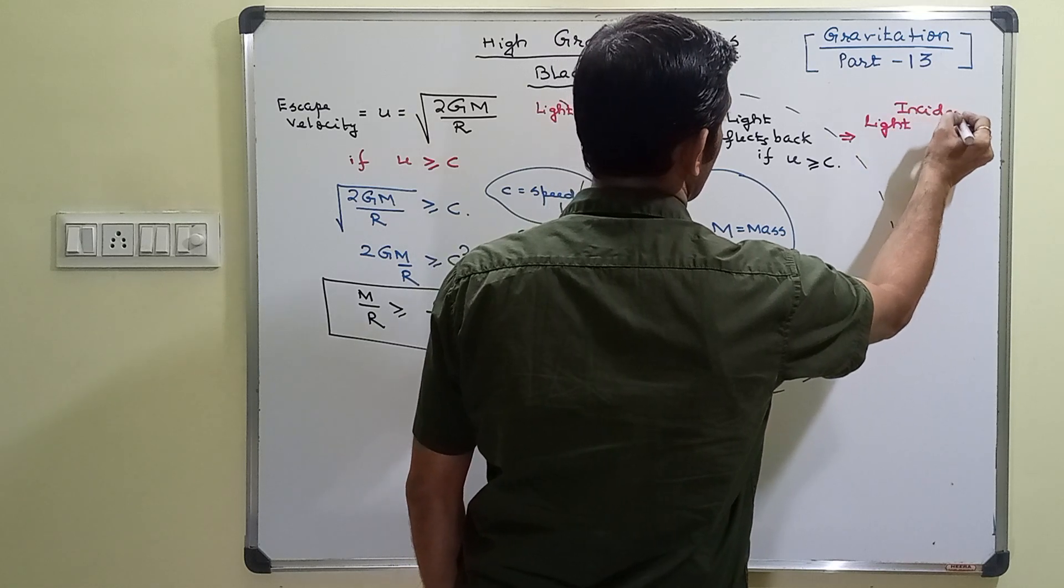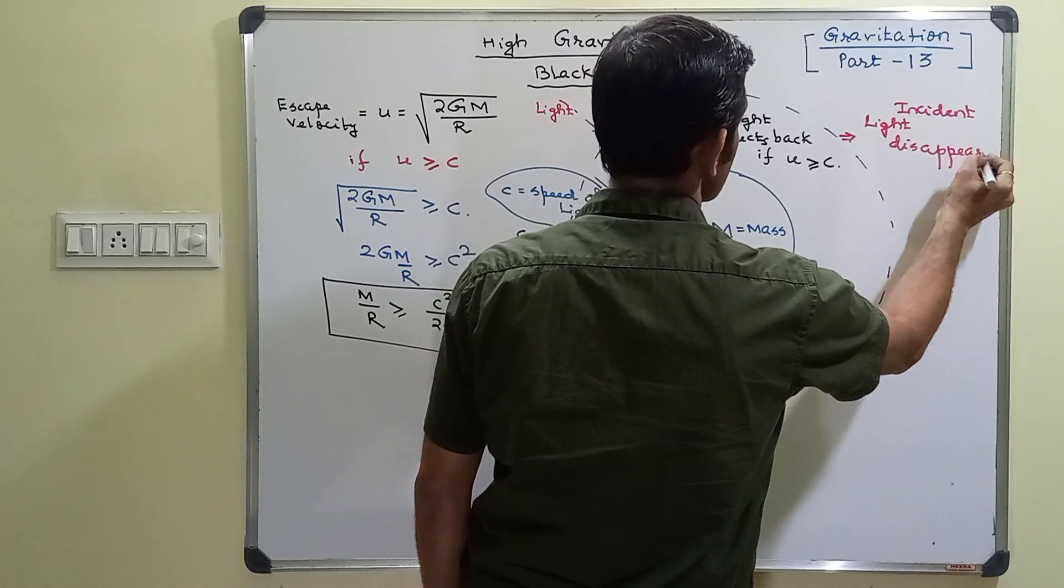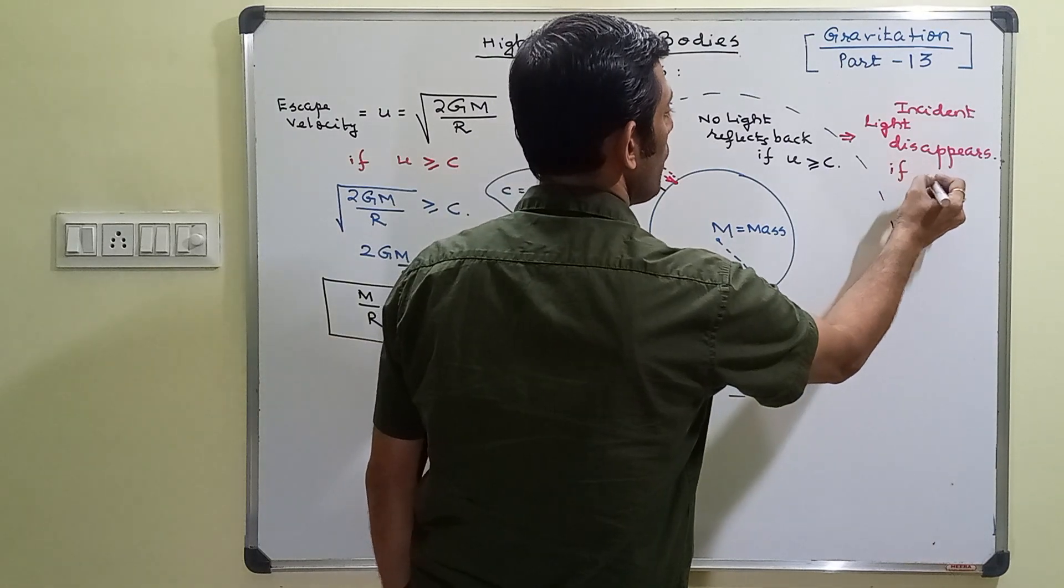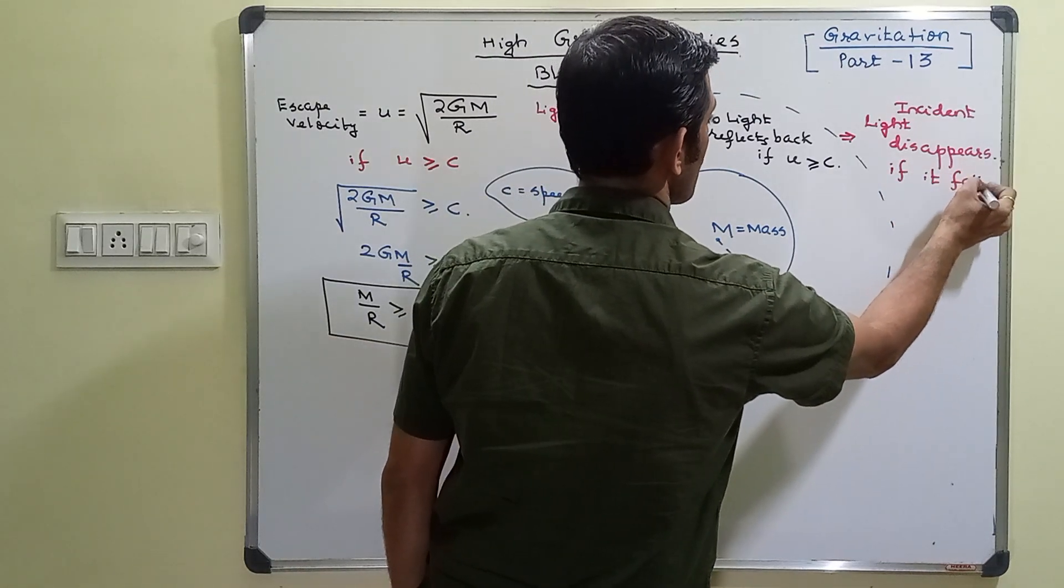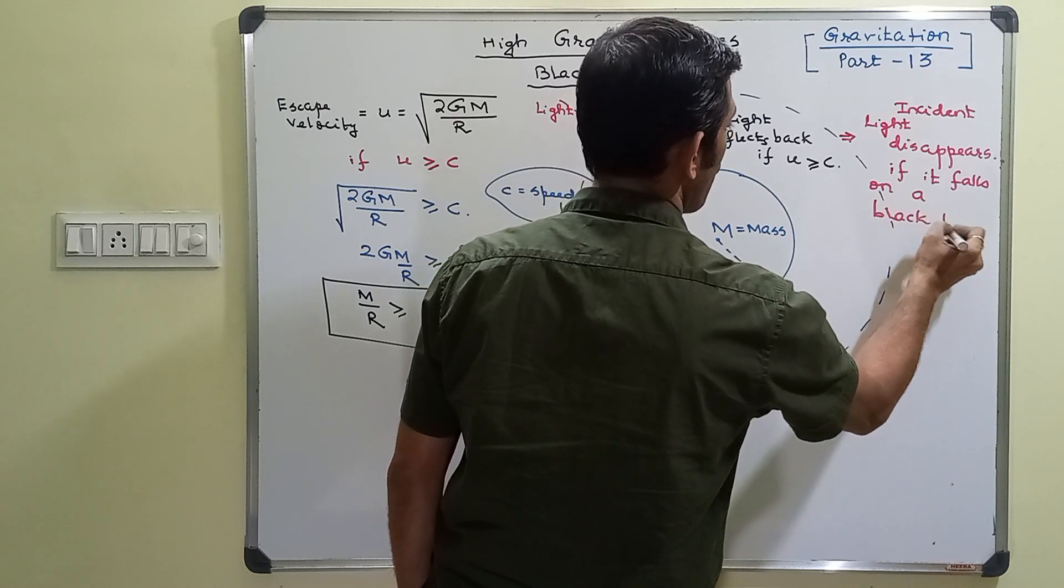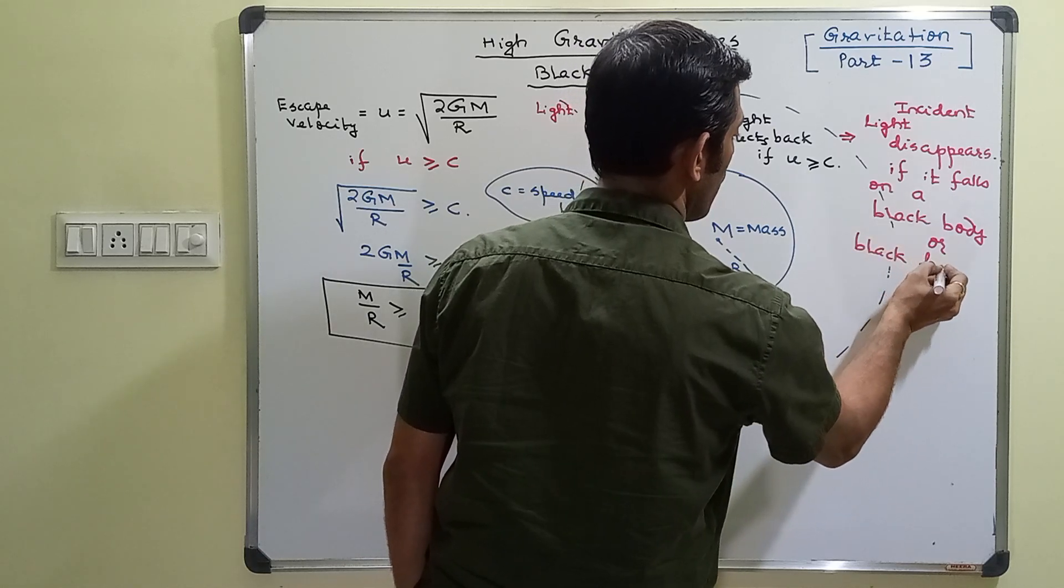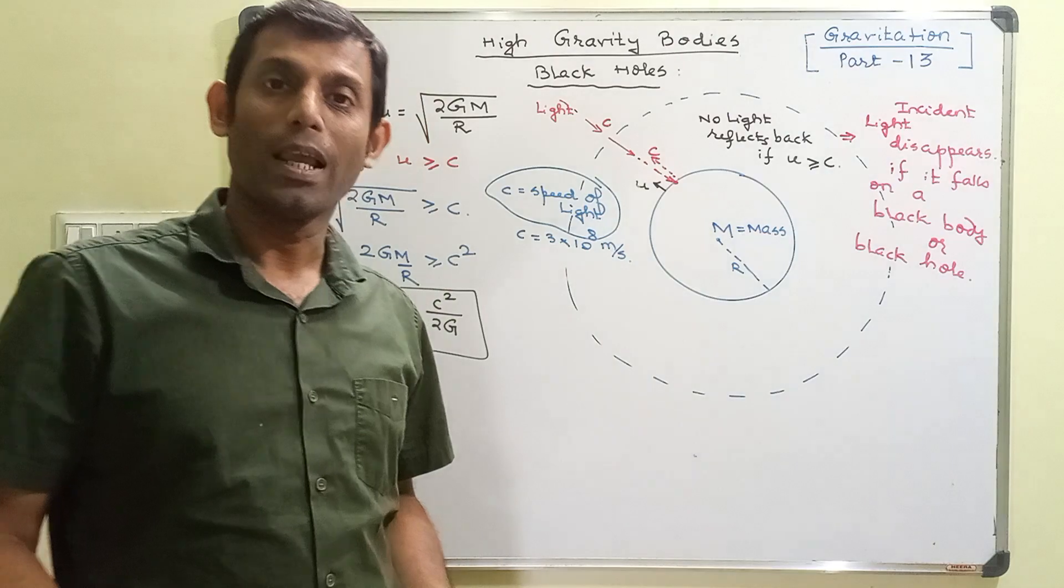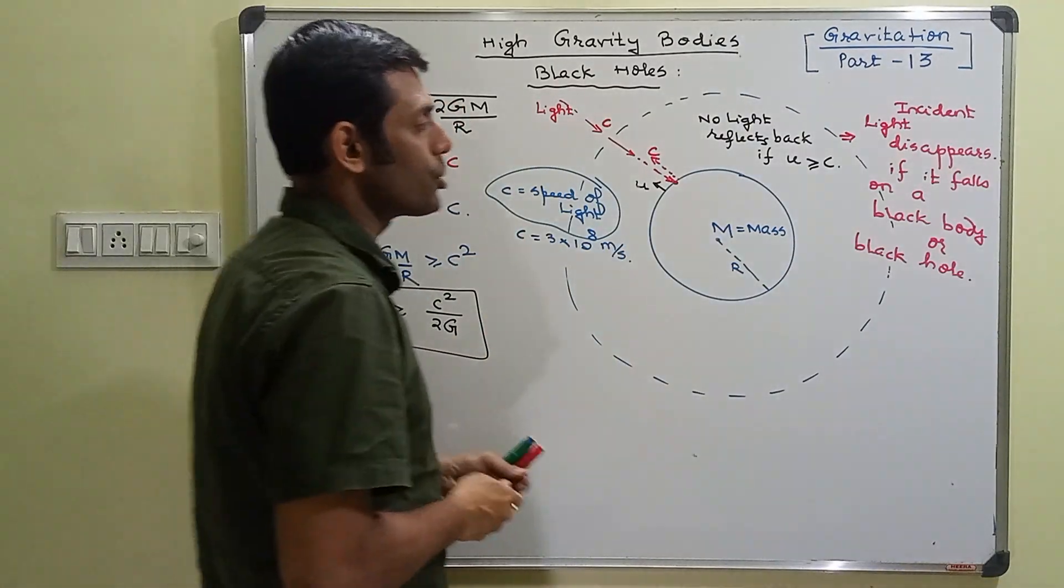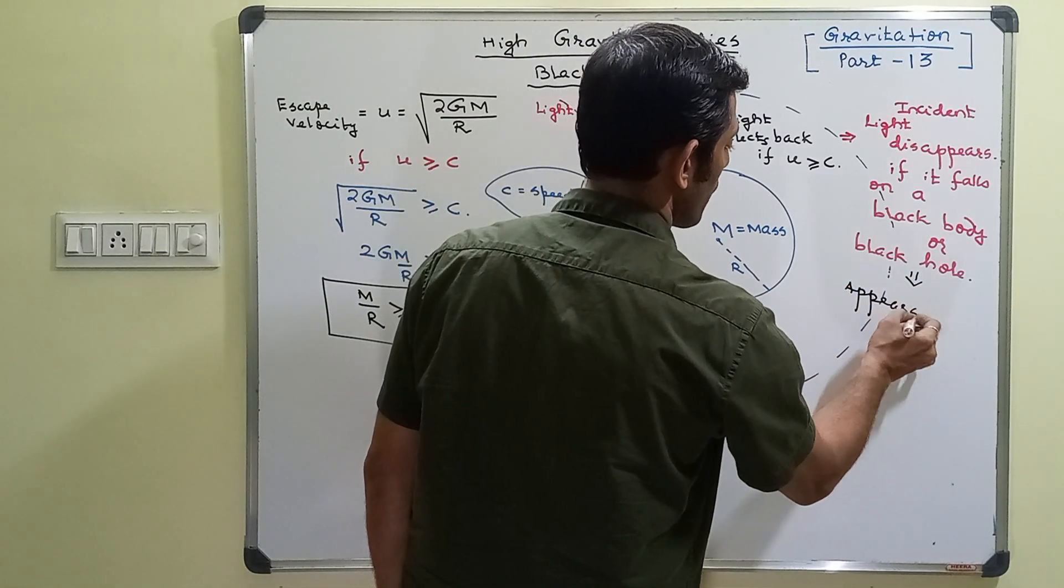The moment it falls on a black hole, if it falls on a black body or a black hole, light disappears. Light disappears and it appears dark. This black hole or this black body appears dark, black.